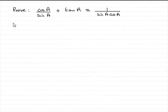Hi. Welcome to another example in my series of proving trig identities. What we've got here is to prove that cos A over sine A plus tan A is identical to 1 divided by sine A times cos A.